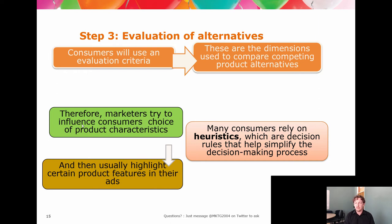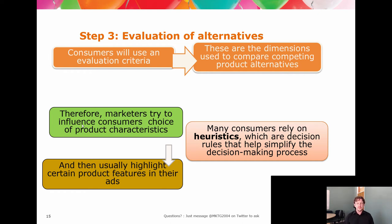Evaluation of alternatives has a huge amount of work done on it in marketing theory. Basically, it comes down to either a calculated list — pros and cons — or a set of simplified decision rules. If you know your customer deals with decision rules, you want to give them emotive responses to trigger those rules. Evaluative customers want to see features. The heuristics will be: 'it's good value' or 'it says something about you.' Look at this in the text and think about how you approach evaluating alternatives.